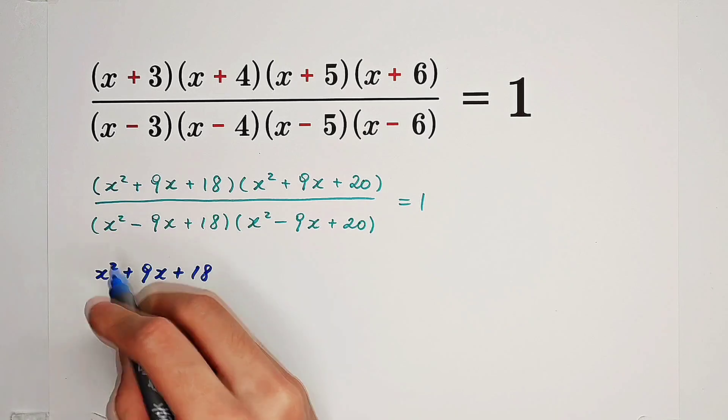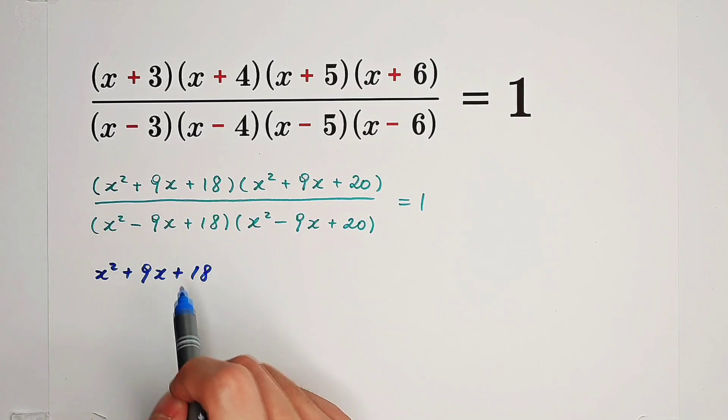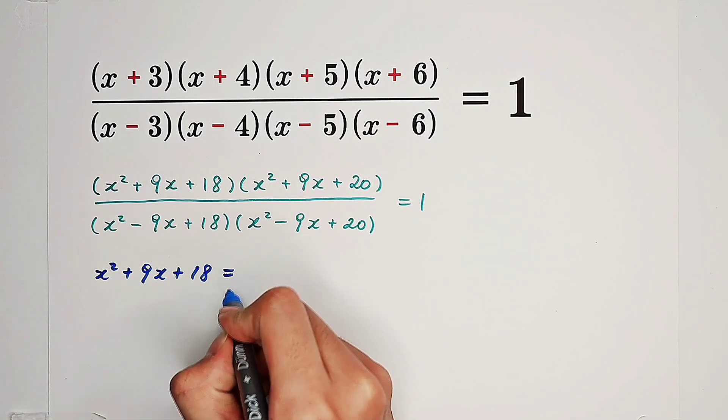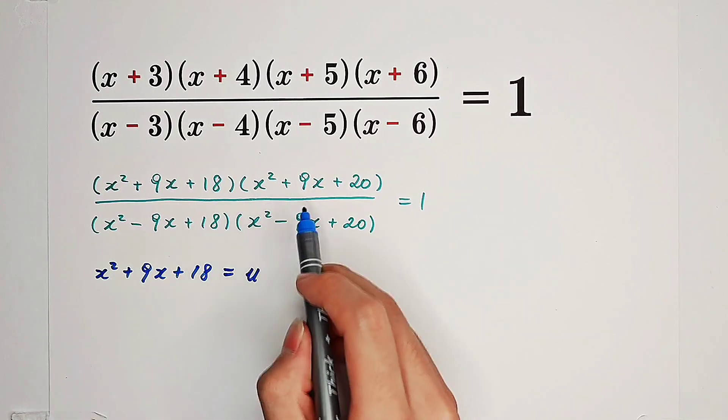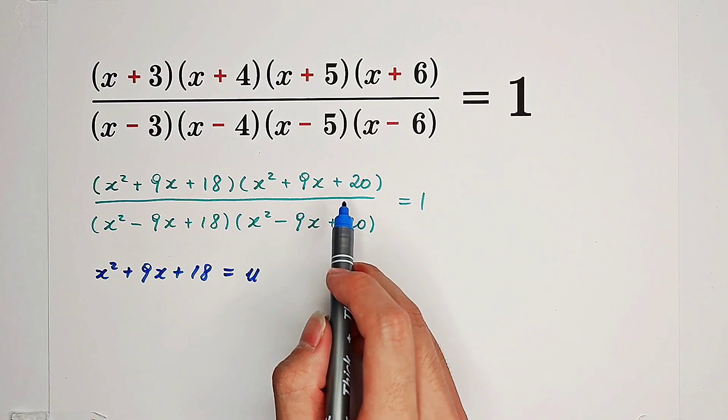If you substitute x squared plus 9x plus 18, let it be equal to u. Then x squared plus 9x plus 20 will be u plus 2.